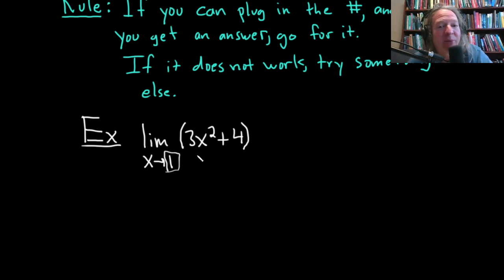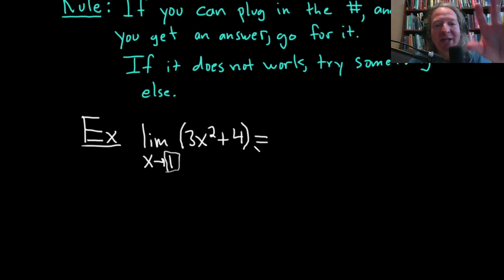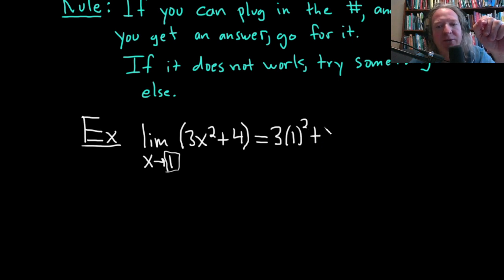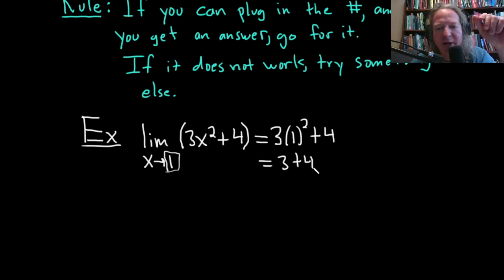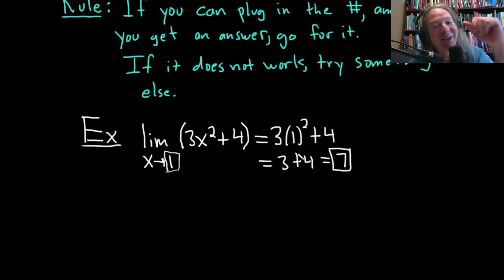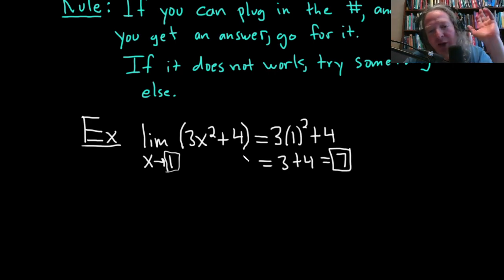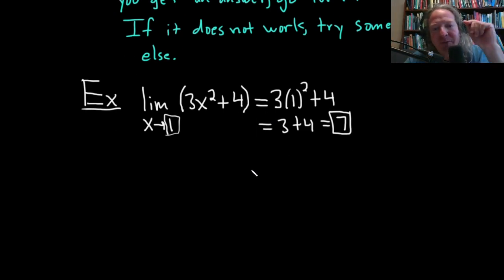There's nothing here that says we can't plug in the number; we can certainly put the one in. When you plug in the number, you're evaluating the limit and that's when you drop the limit sign. So we get three times one squared plus four. One squared is one, so this is three times one, which is just three, plus four — and it's equal to seven. Super easy. We're doing calculus, and it's really not that bad.